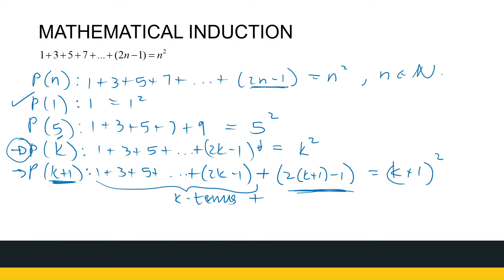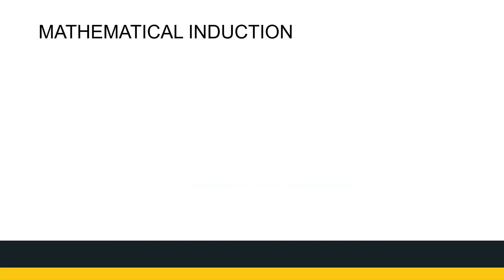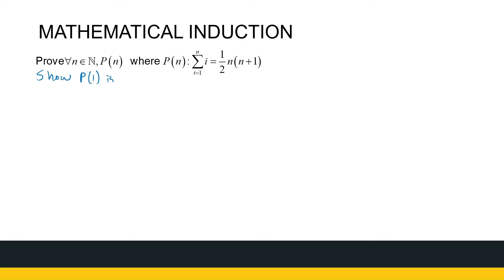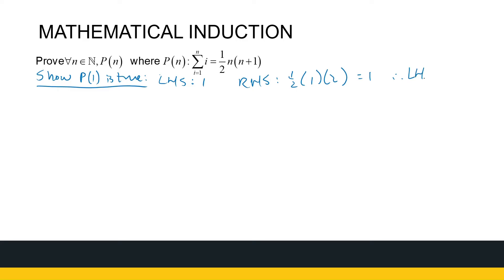Our PN is the sum from i equals 1 to N of i, equal to a half times N times N plus 1 — that is, 1 plus 2 plus 3 plus 4 all the way to N. The first step is to show P1 is true. The left-hand side is just 1. The right-hand side is a half times 1 times 2, which is 1. Left-hand side equals right-hand side, so P1 is true.